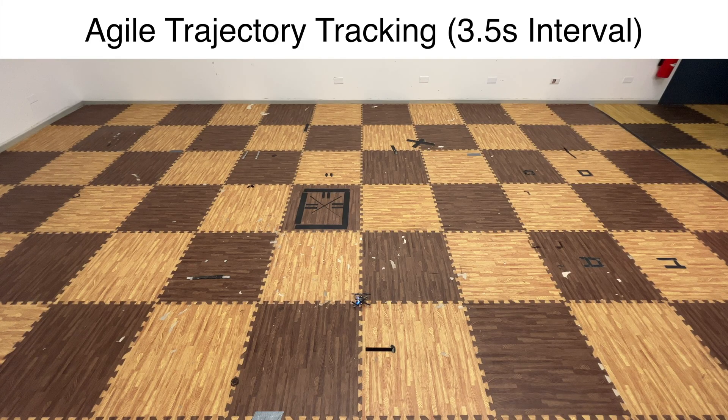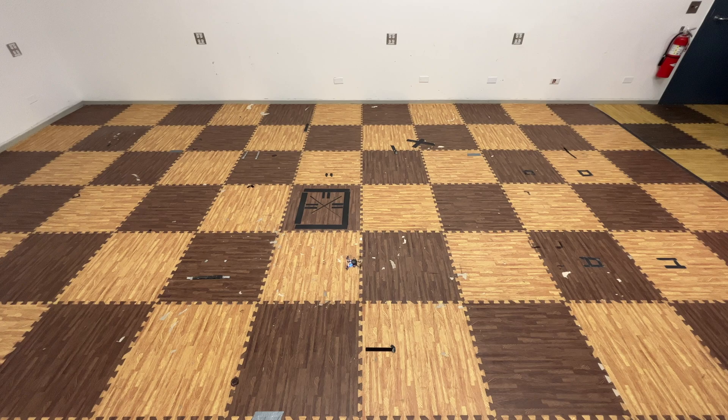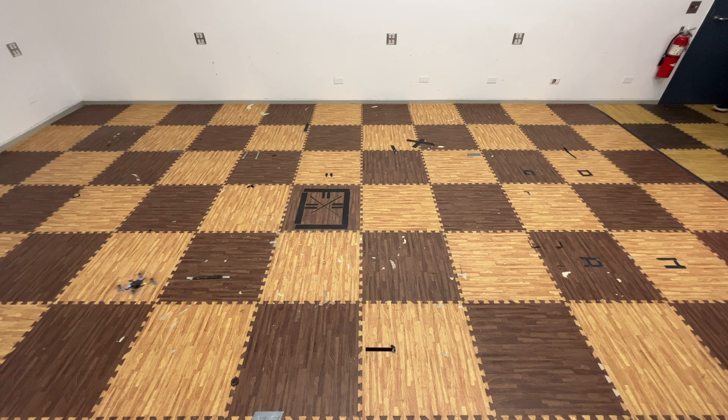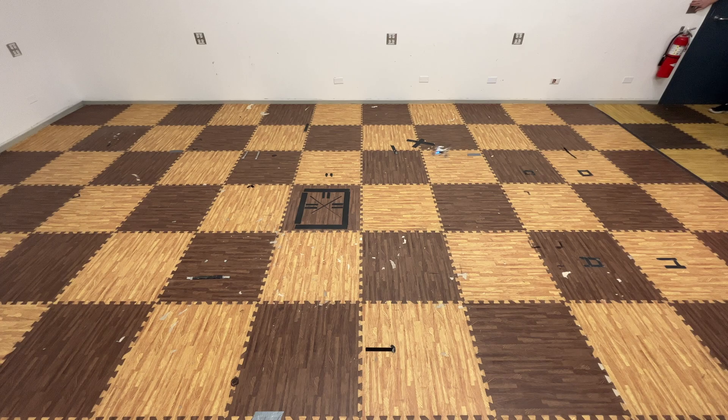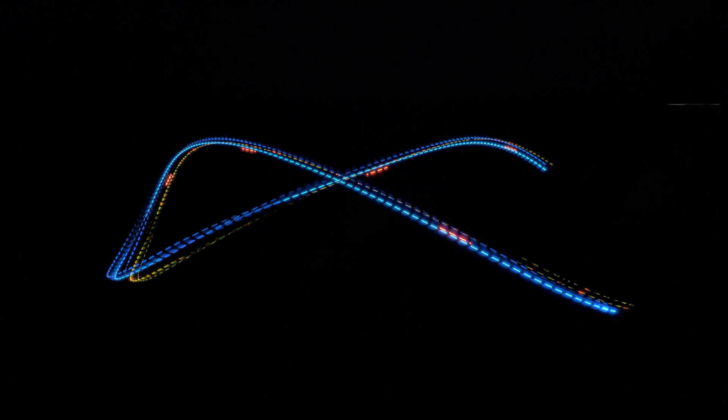In this example we increase the speed of the figure eight trajectory for a cycle time of only 3.5 seconds. Our policy reliably tracks the trajectory, but the tracking error increases. Our policy reaches up to 3 meters per second and comes close to the limit of the dynamical capabilities of the Crazyfly.